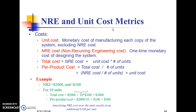NRE and Unit Cost Metrics: Unit Cost is the monetary cost of manufacturing each copy of the system excluding NRE cost. NRE cost is the one-time monetary cost of designing the system. Total Cost = NRE cost + (Unit Cost × Number of Units). Per Product Cost = Total Cost / Number of Units = (NRE Cost / Number of Units) + Unit Cost.